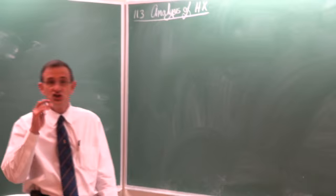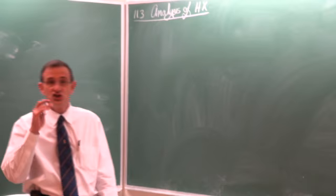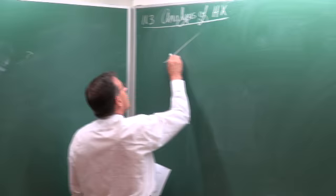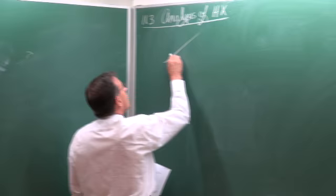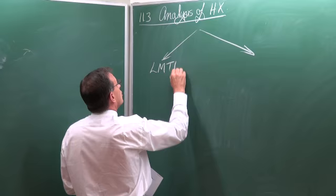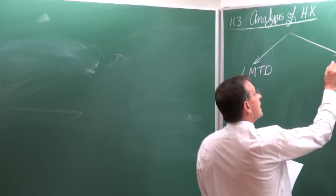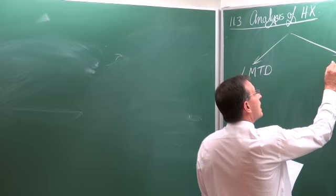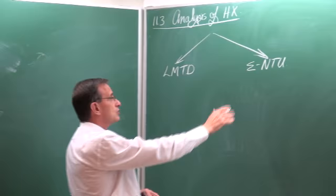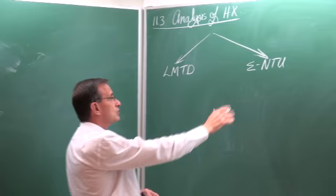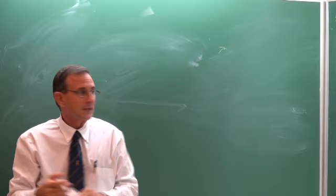In general, when we look at heat exchangers, there are at least two methods that can be used to analyze them. These two methods are the most popular and most widely used. The first is known as the LMTD method — the Log-Mean Temperature Difference method — and the second is known as the Epsilon-NTU method, or the effectiveness-NTU method. We are not going to address the second one now; that will be the next lecture. But for both methods, let's consolidate some of the most important theory.